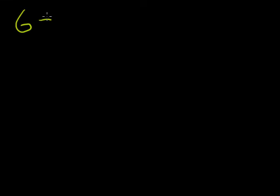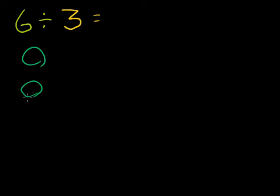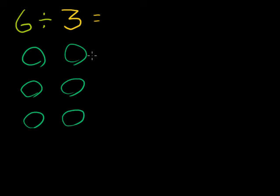What is six divided by three? Let's draw six objects — let's say six bell peppers. One, two, three, four, five, six. I'm going to divide by three. One way to think about that is I want to divide my six bell peppers into three equal groups. You could think of it as: if three people share these bell peppers, how many does each get? So let's divide into three groups.